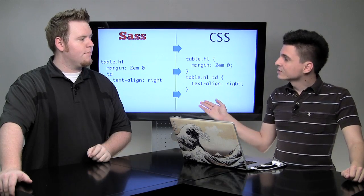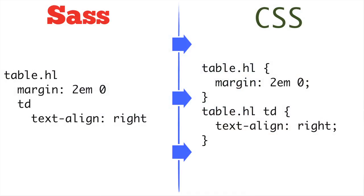Let's get into some more advanced syntax. This is an example of nesting. Here, we're nesting a selector for a table cell inside of another selector for a table with the class HL. As you can see on the right, we would normally have to first select the table, apply our styling, and then select the table cell inside of the table and apply styling to that. With Sass on the left, we can simply select the proper table once, apply styling, and then nest other selectors inside of that.